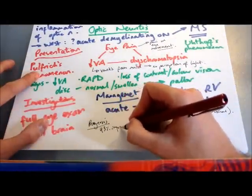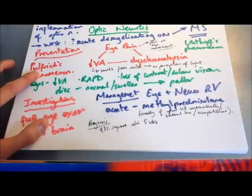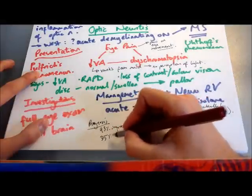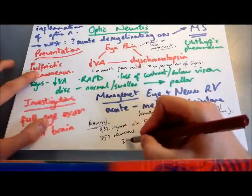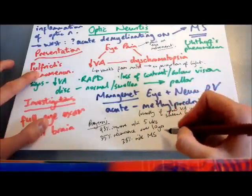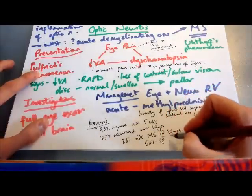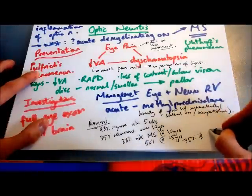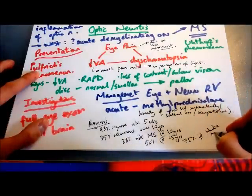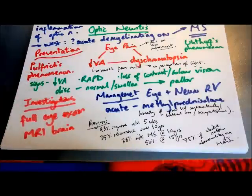Moving on to prognosis: 93% of people show improvement within 5 weeks of onset, and vision continues to get better for up to a year, though 35% of people with optic neuritis have a risk of recurrence over 10 years. There's a 38% risk of developing multiple sclerosis 10 years after the onset of the neuritis, going up to 50% at 15 years. This risk is much higher if there's any white matter abnormality on MRI — bringing you to a 75% risk at 15 years.